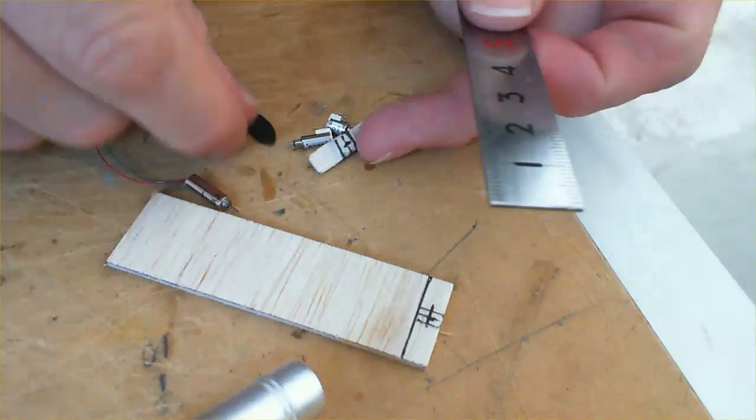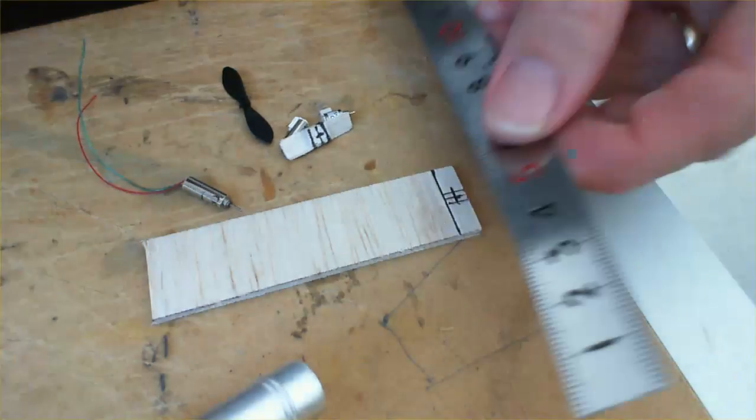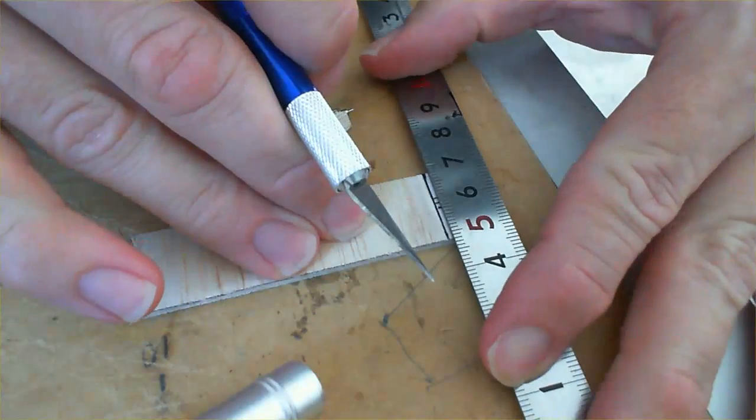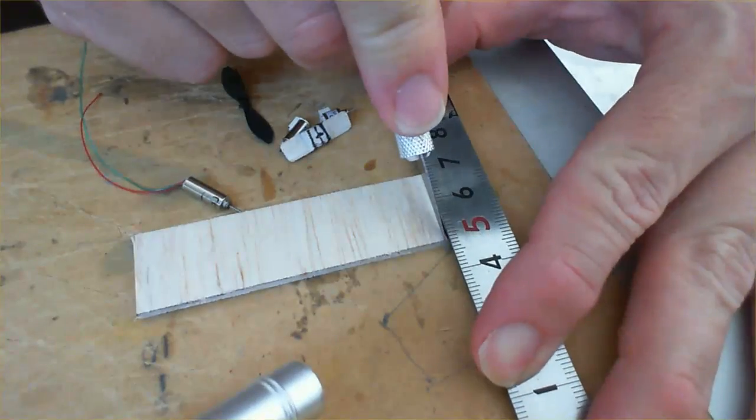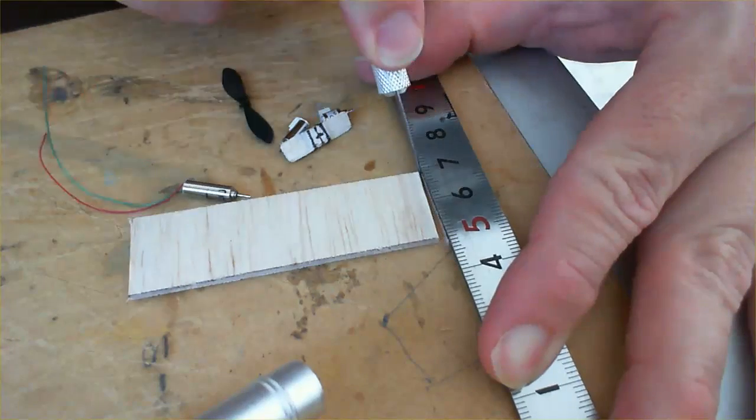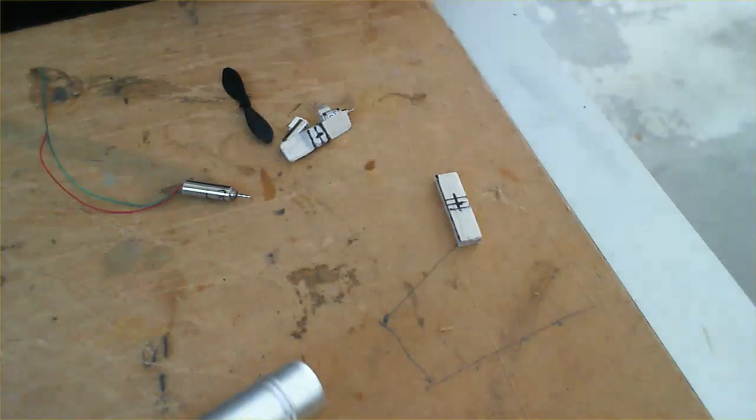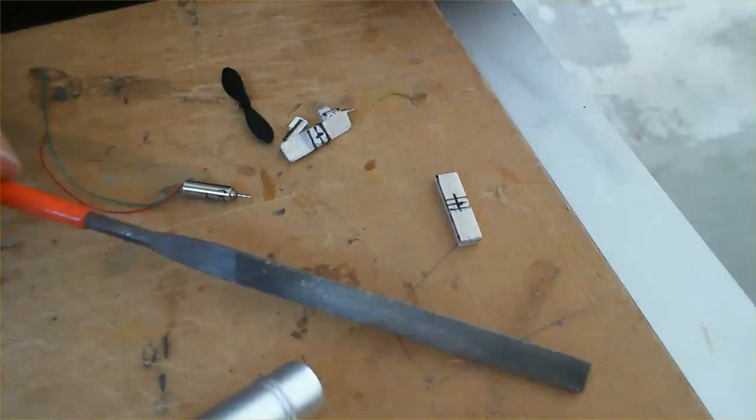Alright, so once you've marked out your propeller, you just need to cut the balsa. And what we're going to be doing is actually filing this down. So we're just going to need a file. Maybe a nail file will do it. I've just got a little hobby file here.